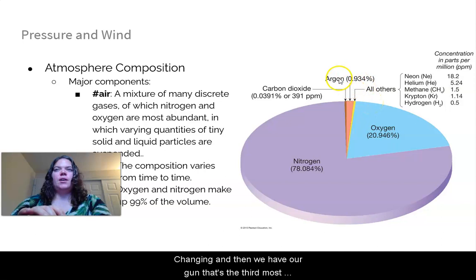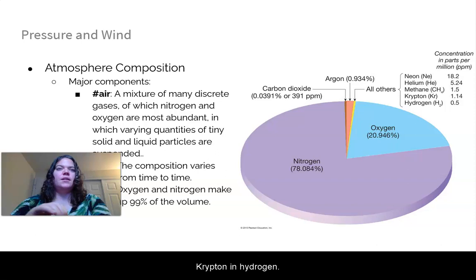So when we talk about air, it's actually a mixture of many discrete gases, of which nitrogen is the most abundant. So it's 78% of the dry air. And then oxygen is 21%. And everything else falls into that smaller category. Please note that carbon dioxide is 0.04%. Of course, this number is changing. And then we have argon, that's the third most abundant gas. And then everything else, these are noble gases: neon, helium, methane, krypton, and hydrogen.